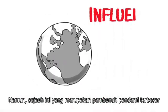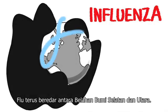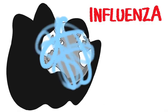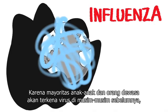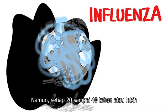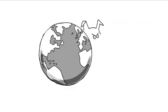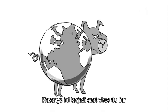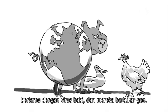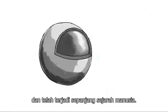By far the greatest pandemic killer is influenza. Flu is constantly circulating between the southern and northern hemispheres. In North America and Europe, seasonal flus occur every autumn and winter. As the majority of children and adults will have been exposed to the virus in previous seasons, these illnesses are usually mild. However, every 20 to 40 years or so, the virus undergoes a dramatic mutation. Usually, this occurs when a wild flu virus circulating in ducks and farm poultry meets a pig virus and they exchange genes. This process is known as antigenic shift and has occurred throughout human history.